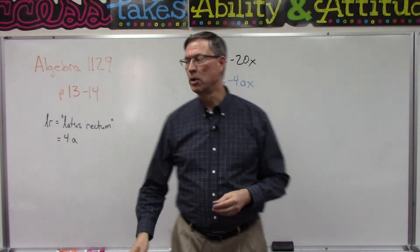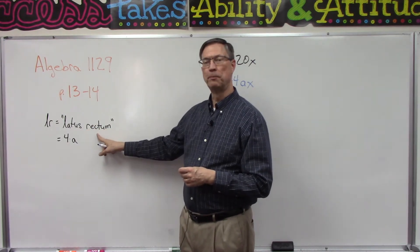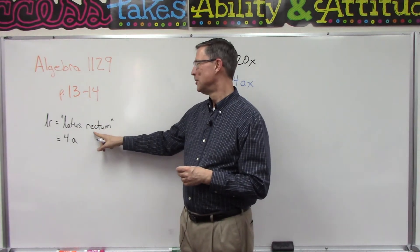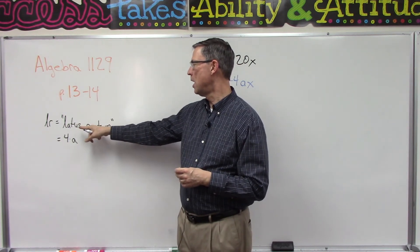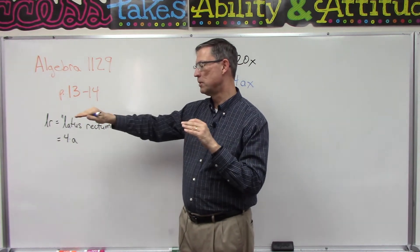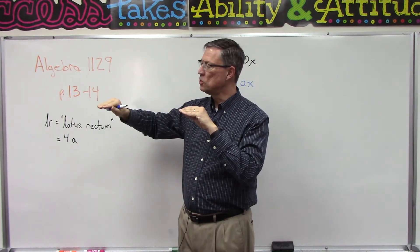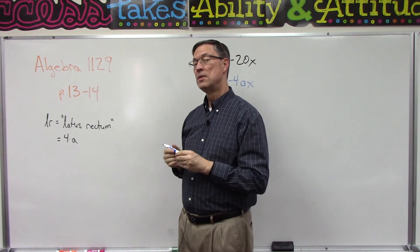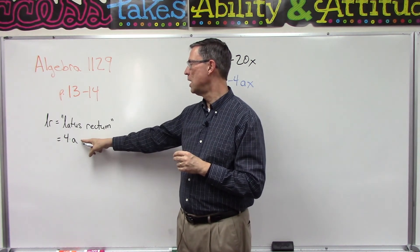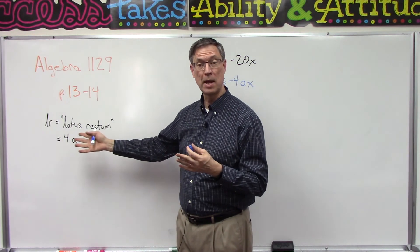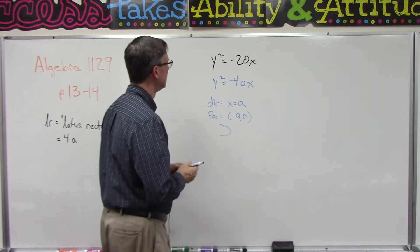We have one more term that they talk about on page 13: the latus rectum. The latus rectum means the line that goes across the bottom, stretches through the focus on both sides, and shows us how wide the graph will be. That formula is 4a. Once we know what a is—a is the key to figuring out the whole rest of the equation.